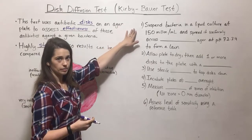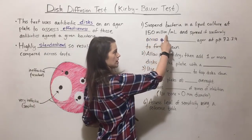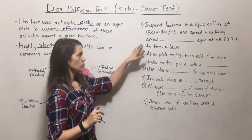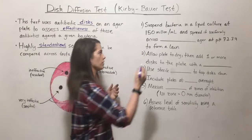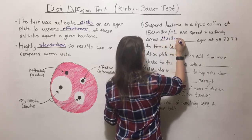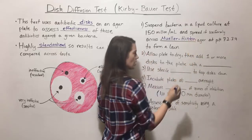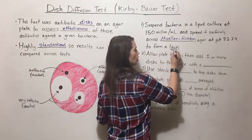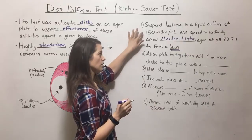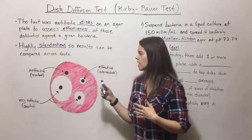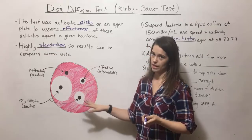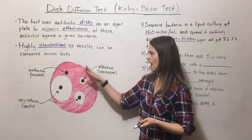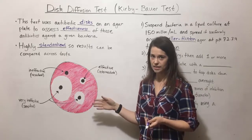The first step is to suspend the bacteria in a liquid culture at 150 million cells per milliliter — a very specific concentration. You then spread it uniformly across a specific agar known as Mueller-Hinton agar at a pH of 7.2 to 7.4. You want to form a lawn, meaning the bacteria, once grown, should cover the entire plate. Here in this image, the bacterial growth is represented in red.